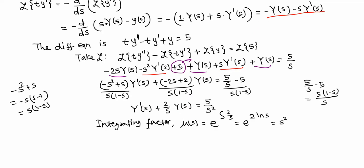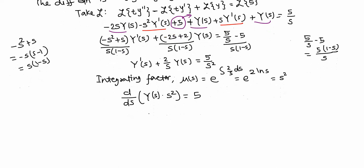The integrating factor is mu(s) = e^(integral of 2/s ds) = e^(2 ln s) = s². Multiplying both sides of the differential equation by s², the left-hand side becomes d/ds[s²·Y(s)], and the right-hand side becomes 5. Integrating both sides gives s²·Y(s) = 5s + C.